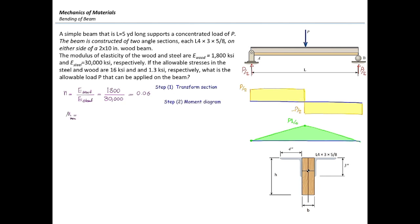Converting 5 yards to inches gives 180 inches, so L/4 = 45 inches. Therefore, the maximum moment is M_max = 45P (pound·inch), expressed as a function of P.